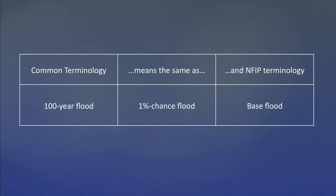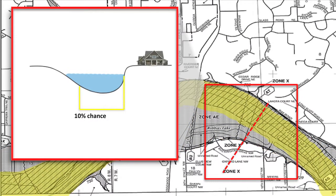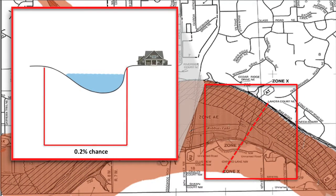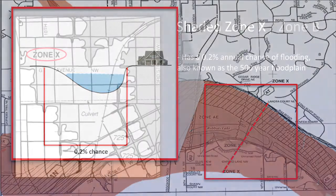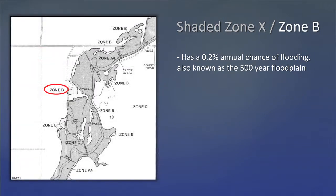The 1% chance flood is the NFIP's current standard for floodplain management purposes. As discussed in Video 8, the 1% chance flood was adopted as a compromise between smaller, more frequent flood events, such as a 10% chance flood, and larger, more infrequent events. Some communities have chosen to reduce their risk by adopting the 500-year flood, also known as the 0.2% chance flood, as the event from which new development must be protected. The 0.2% chance flood is represented as shaded Zone X on FIRMs developed with detailed flood insurance studies, and as Zone B on older FIRMs published before 1986.